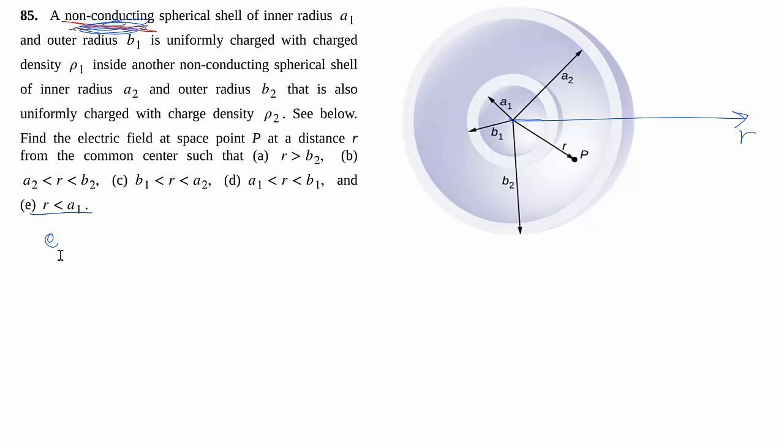So first we do e, r is less than a₁, which is inside the small shell. So again, spherical geometry, spherical Gauss's surface, no surprise there. No matter the surface, you can see that it encloses how much charge? No charge. So therefore, flux enclosed equals zero, and therefore e has to be equal to zero.